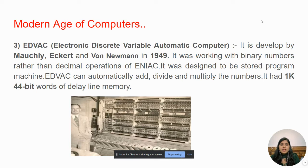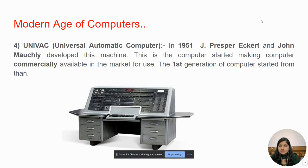EDVAC was a stored program machine. It was the first machine that could automatically add, divide, and multiply. The next machine is UNIVAC — Universal Automatic Computer — created by J.P. Eckert and John Mauchly. This was the first machine that was commercially available in the market for general purpose use, and it represents the first generation of real computers.